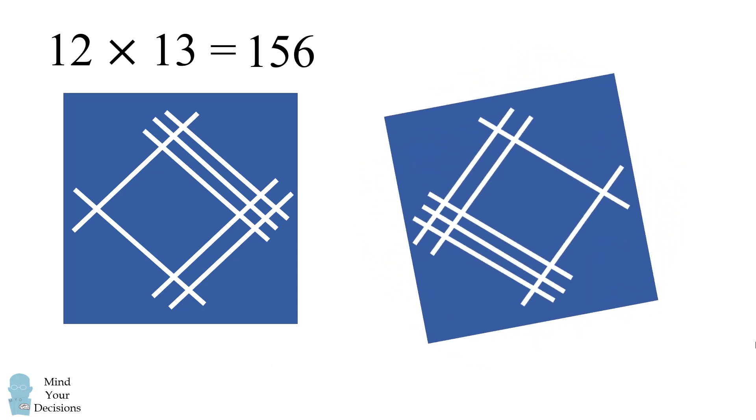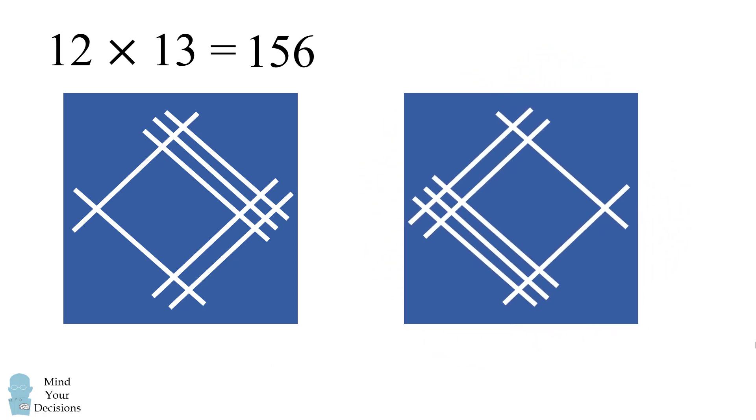Let's rotate it so it's 180 degrees from the original. What will this diagram correspond to? Here we have 21 and in the other direction we have 31. So this diagram is 21 times 31. We can again count the intersections to get the answer to this problem and we get 651.